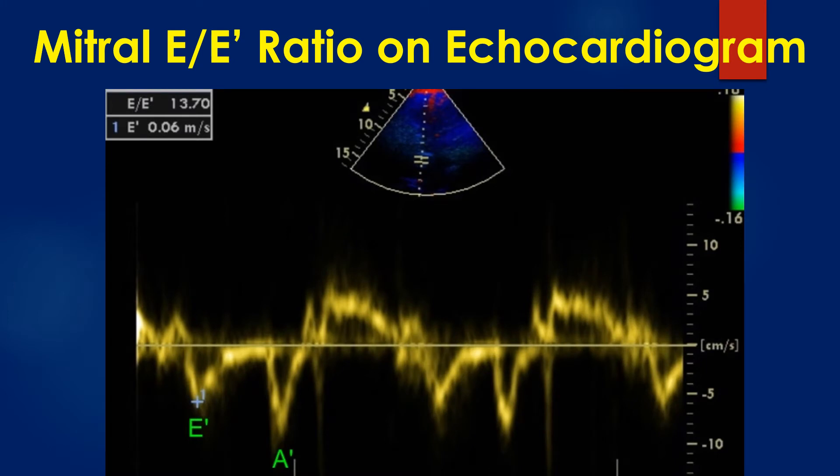Tissue Doppler echocardiography showing measurement of mitral E by E prime ratio for assessment of diastolic dysfunction. Initially, the mitral E wave is measured and stored as given in the image.